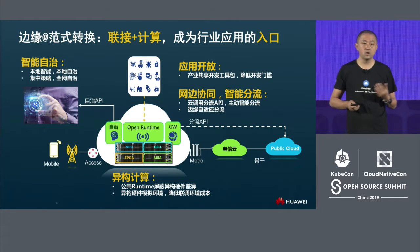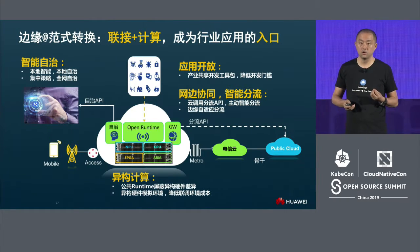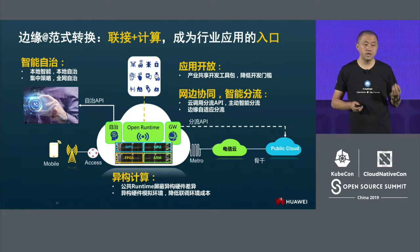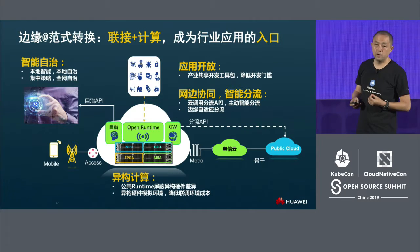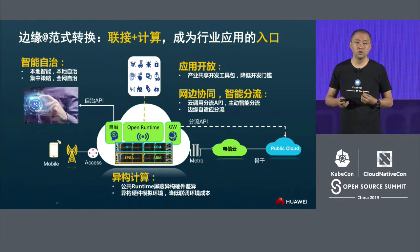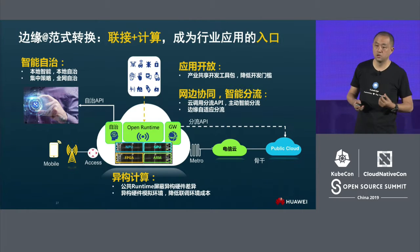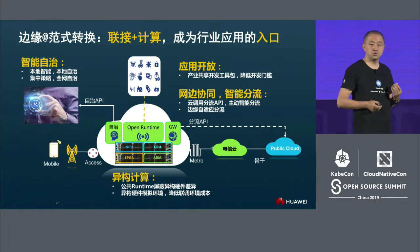The second step is the paradigm change of the edge. The edge needs to be open and suitable for dynamic industry applications. Computing power — including direction, rendering, and general compute — needs to work on heterogeneous architecture. We must look at different scenarios and achieve self-governance and self-management. Differentiated industry applications and edge computing need to be coordinated with the network to realize protection and adaptation across different industries and achieve intelligent resource allocation.